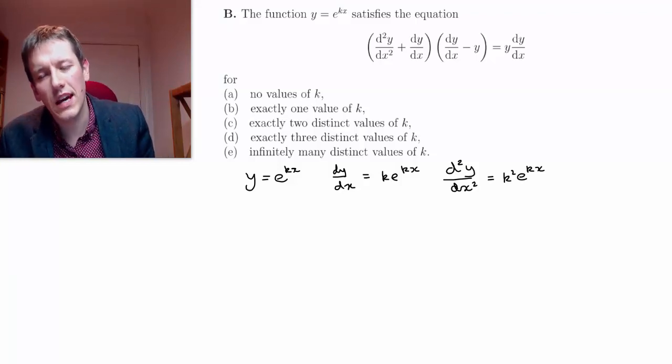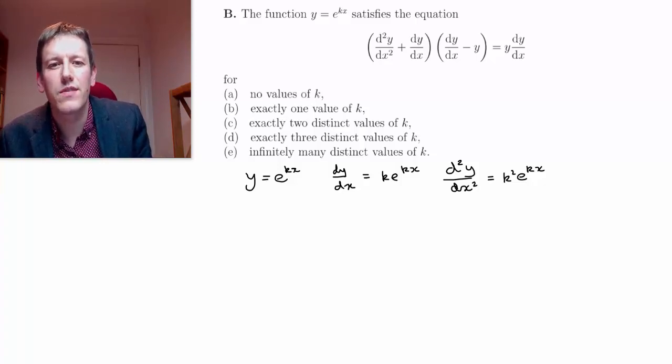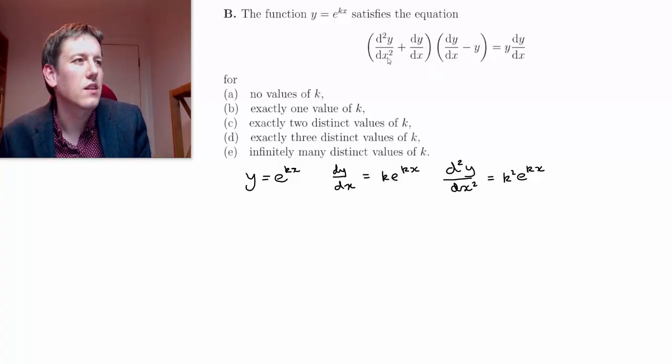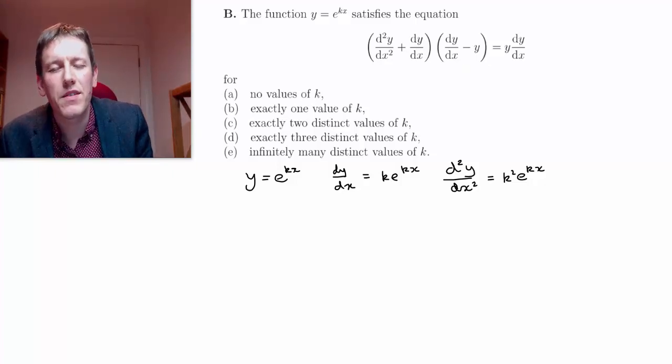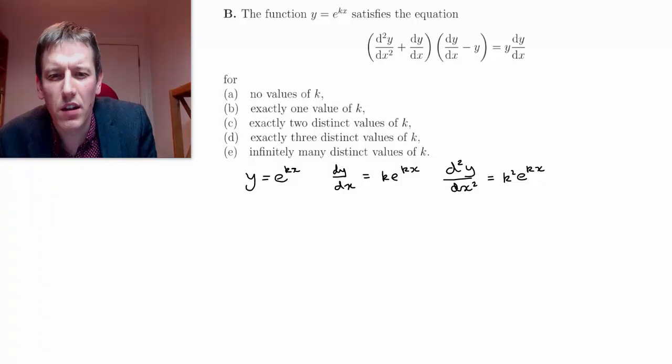So actually, every one of these things has e to the kx in it, which is going to be nice. So if I look at this whole equation here, I've effectively got every term with e to the kx. But I'll write them all out.